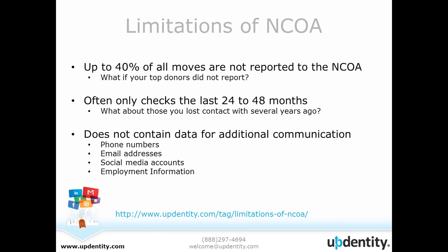That's a real downfall of NCOA — it just a lot of times doesn't go back far enough. You might have an address that's several years old, and how are you going to get the new one? And it also doesn't contain additional forms of communication — while you're just getting updates to the addresses, you're not getting phone numbers, email addresses, any kind of social media accounts, or employment information. Just out of curiosity, have any of you utilized NCOA? It would be great if you could share any kind of stories you've had, whether it's been a positive or negative experience.